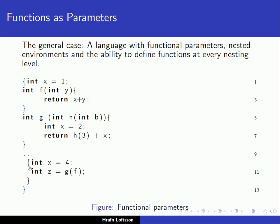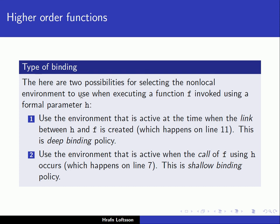Then the main block opens another nested block, declares a local variable x equal to 4, and then calls g with f. So here f is a reference to this function, meaning we're calling g with a function parameter. When we look at this example, we can see there are really two possibilities for selecting the non-local environment to use when executing function f invoked using a formal parameter.